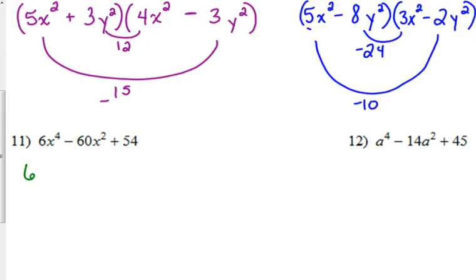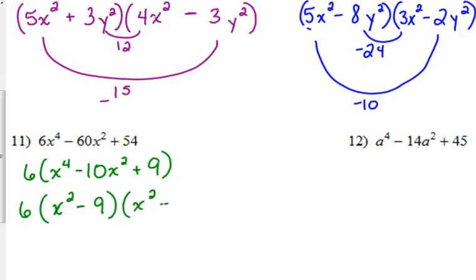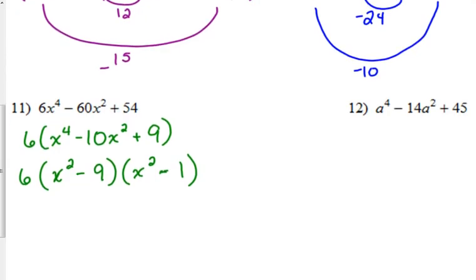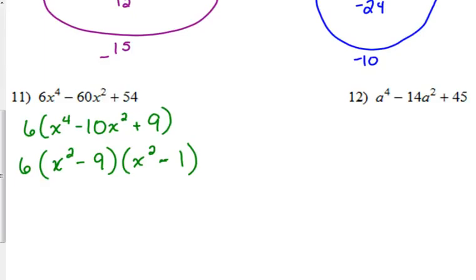Last two examples. 6x to the fourth minus 60x squared plus 54. There is a GCF, it's 54 divisible by 3, I believe it is, let's take out a 3, 2x to the fourth minus. Oh, you know what, I bet, nope, it's divisible by 6. x to the fourth minus 10x squared plus 9, and that would factor into x squared minus 9 times x squared minus 1. 9 times 1 is 9, 9 plus 1 is 10.